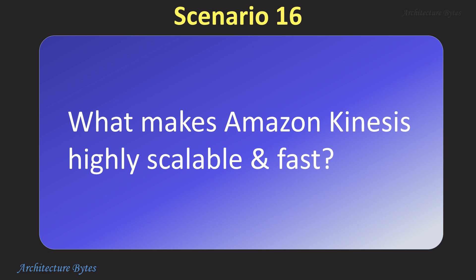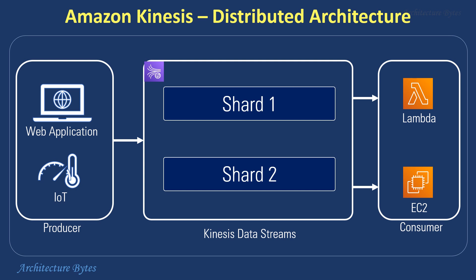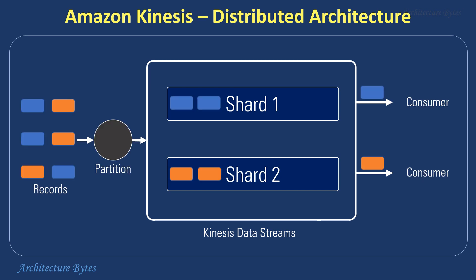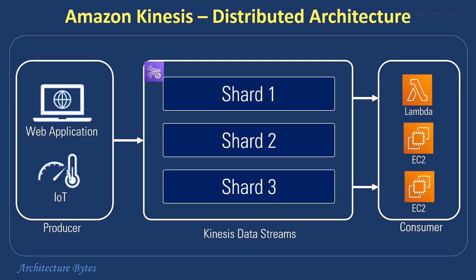What makes Amazon Kinesis highly scalable and fast? Kinesis has a distributed architecture which allows it to distribute data processing workload across multiple resources. The data stream is spread across multiple shards, and each shard can be processed independently in parallel. This enables Kinesis to handle high data ingestion rates and process large volumes of data in real-time. Partition keys are used to assign data records to shards, so with an appropriate partition key strategy, data can be distributed smartly across shards. Kinesis also provides ordering of data records within a shard. Data capacity of your stream is a function of the number of shards. Kinesis has the ability to scale the number of shards dynamically — each shard can support a certain level of throughput, and by increasing the number of shards, Kinesis can scale up its processing capacity. This elastic scaling ensures that Kinesis can maintain high-speed processing with increased workloads.